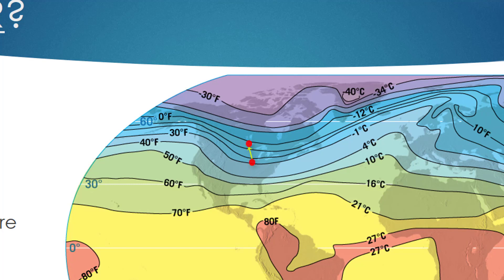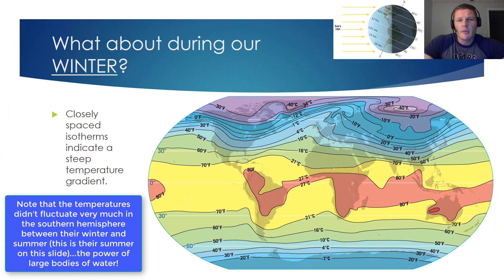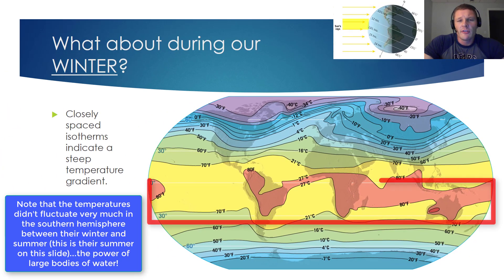Suppose you want to travel from central Illinois up to Winnipeg. Along that trip, you would see a huge drop in temperature over a relatively short distance — short on a global scale. In this image, we see that most of the hottest temperatures have shifted either to the equator or slightly below the equator.